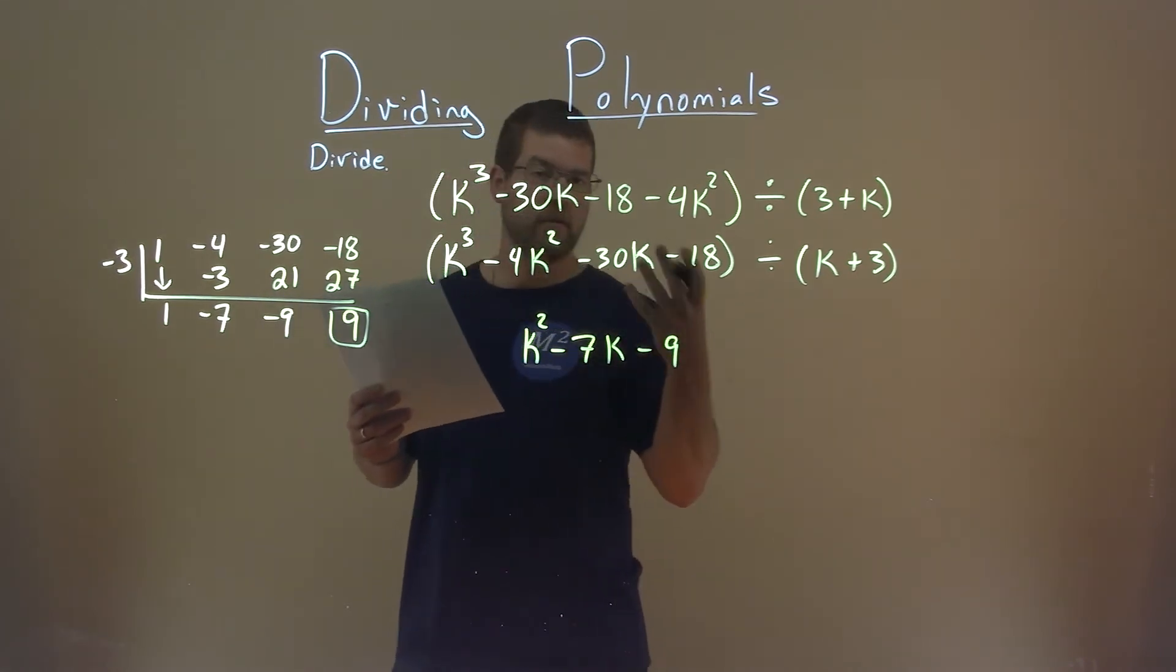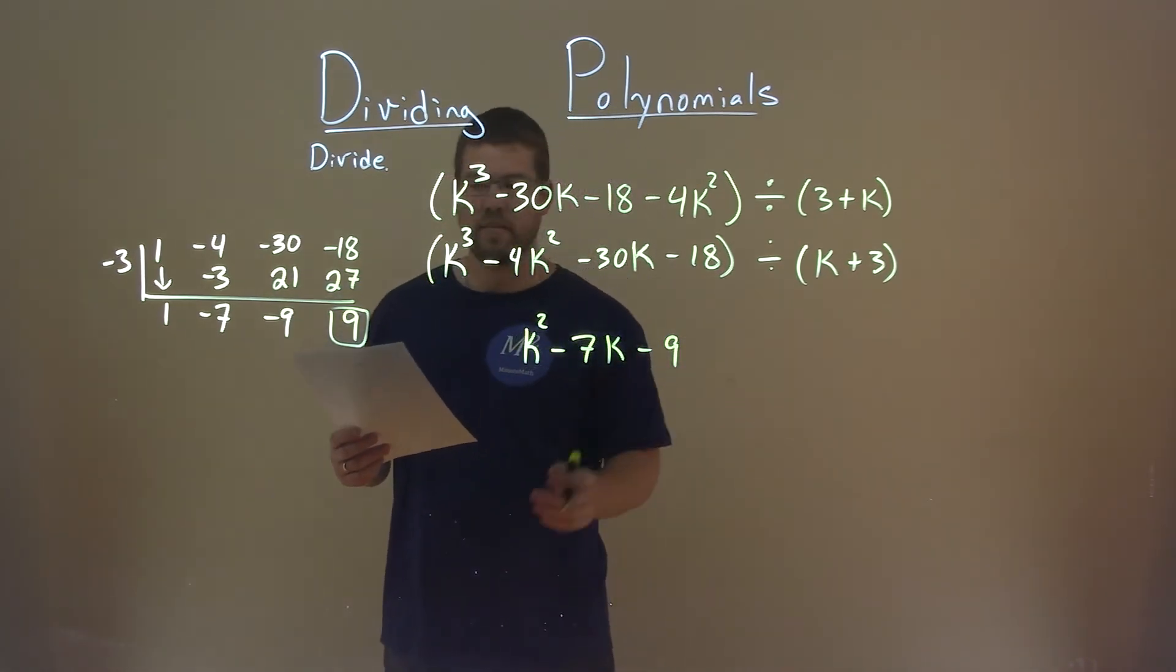Same thing. k to the first power minus 1 is k to the 0. Don't need to write that. It's a minus 9.